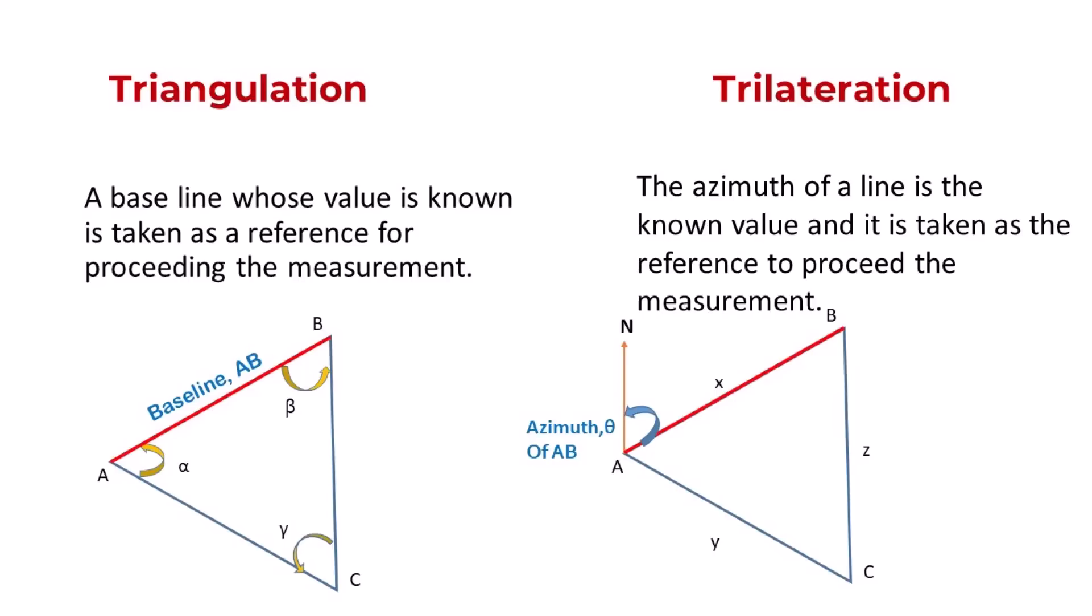Once the angles are determined and one side is known, we can determine the sides AC and BC using the sine rule.